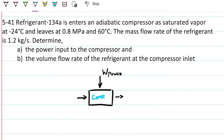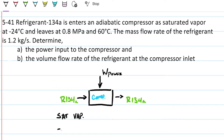We have R134a entering and R134a leaving, compressed. We are entering as a saturated vapor at minus 24 degrees Celsius and leaving at 0.8 megapascals and 60 degrees Celsius. If you want to know the inlet pressure, we go to the temperature property table and grab the saturated vapor pressure at minus 24 Celsius.